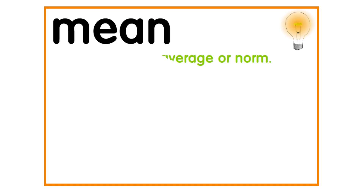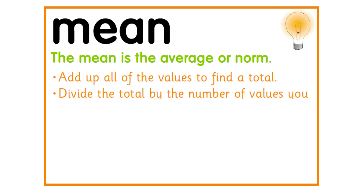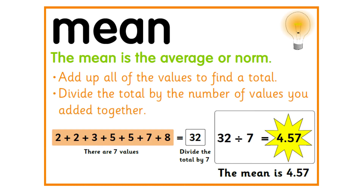The mean, often referred to as an average, is calculated using the following two steps. First, add all of the observations in the dataset, and then divide the total sum from step 1 by the number of data points in the dataset.